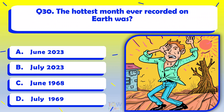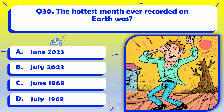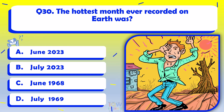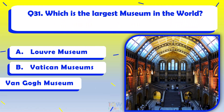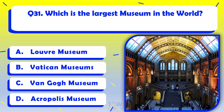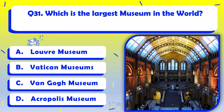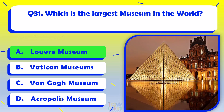The hottest month ever recorded on Earth was? July 2023. Which is the largest museum in the world? Louvre Museum.